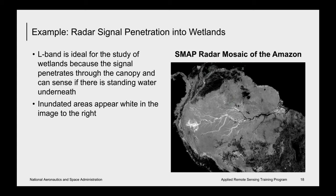This example shows radar signal penetration through vegetation to detect inundated areas. This is an L-band SMAP radar mosaic of the Amazon basin acquired in April 2015. In the middle of the image you can see the Amazon River, and further west are vast bright areas — inundated vegetation. L-band is ideal to detect inundated vegetation in the tropics because the signal can penetrate through most high-biomass vegetation. Inundated vegetation means there is vegetation with standing water underneath.